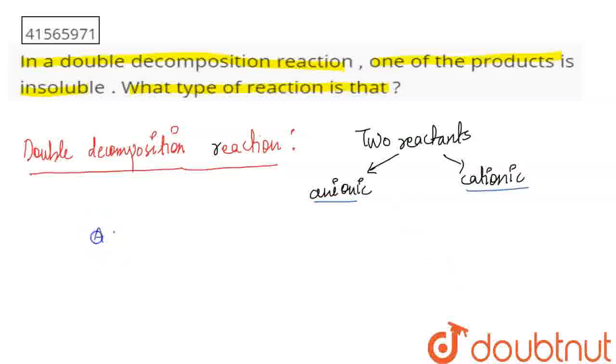For example, suppose you have AX and you have a BY compound. You can see that X and Y exchange, so we have a double decomposition reaction.